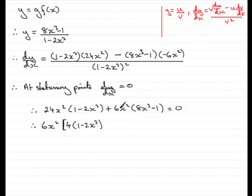And then for here, we've got the 6x squared out the front. We've just got this bracket. So we'll put that in there. And we've got 8x cubed minus 1. Put that in brackets. Close the square bracket. Equals 0.